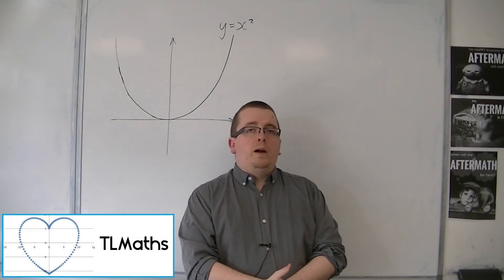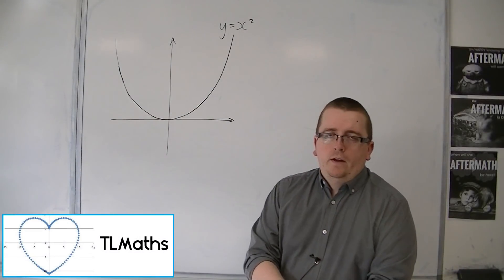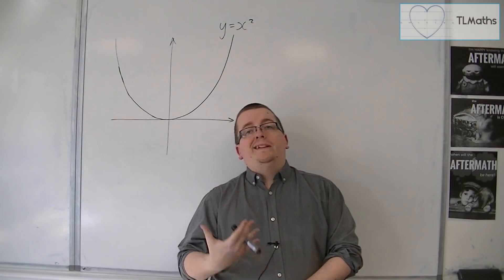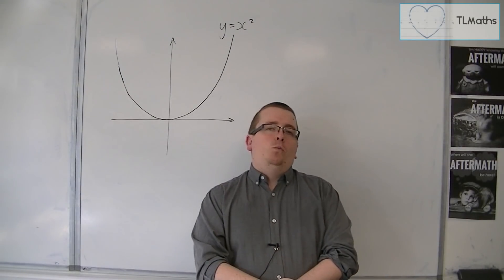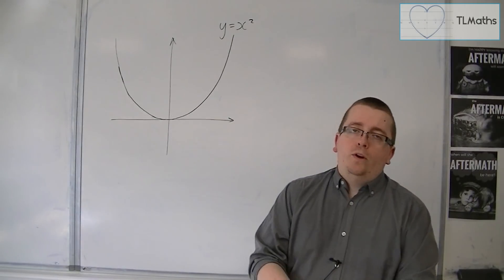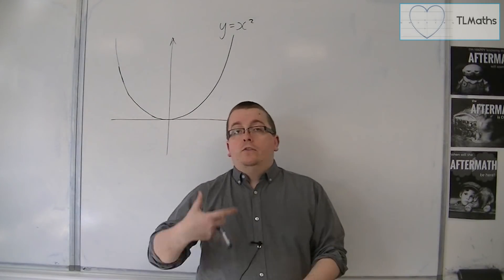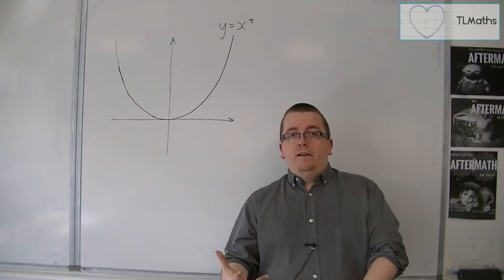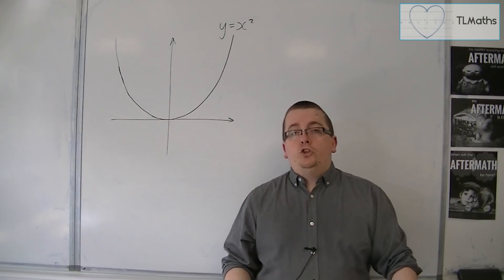We've introduced some formal notation for what we're calling differentiation, this dy by dx. For a straight line graph, it's quite straightforward to identify the gradient of that line, because the gradient of the line is unchanging.